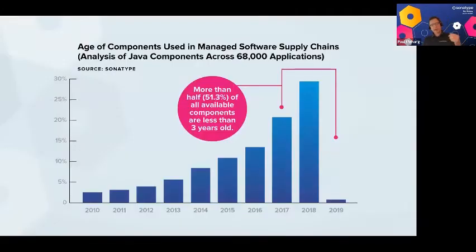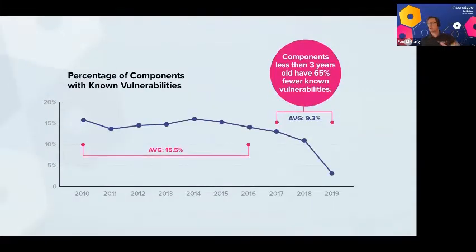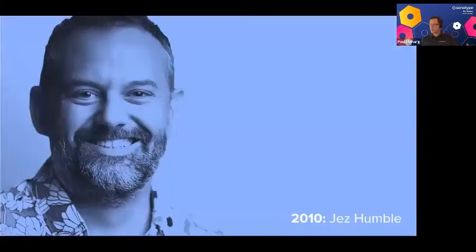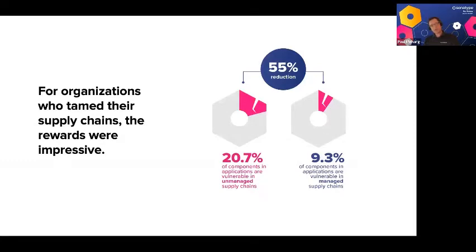Keeping your components up to date is very good because most components available are younger than three years old, yet most discovered vulnerabilities are in older components. Following Jez Humble's Continuous Delivery principles around automation helps you keep those practices in place. Companies that do this can achieve a 55% reduction in risk, going from about 20.1% down to under 10% risk.